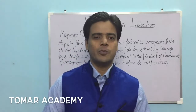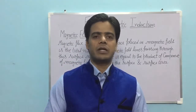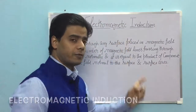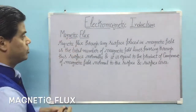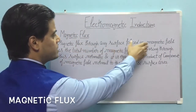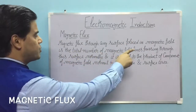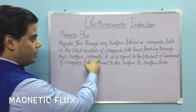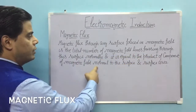Hello everyone, welcome to my YouTube channel Tomorrow Academy. Today we will start with electromagnetic induction, and our first topic is magnetic flux. Magnetic flux through any surface placed in a magnetic field is the total number of magnetic field lines passing through the surface normally, and it is equal to the product of the component of magnetic field normal to the surface and the surface area.